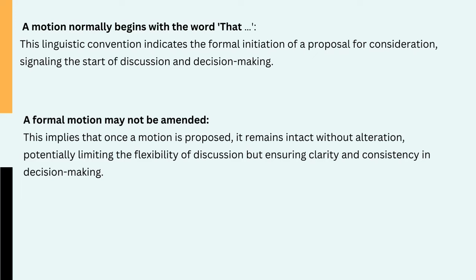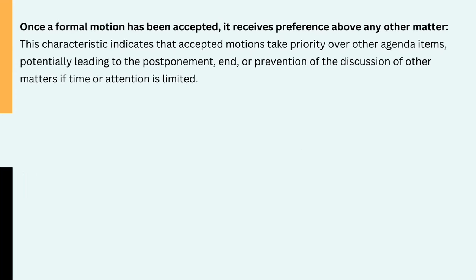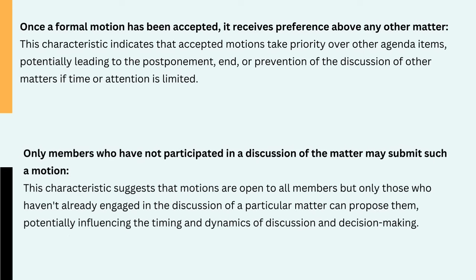8. A formal motion may not be amended — once a motion is proposed, it remains intact without alteration, potentially limiting the flexibility of discussion, but ensuring clarity and consistency in decision making. 9. Once a formal motion has been accepted, it receives preference above any other matter — accepted motions take priority over other agenda items, potentially leading to the postponement, end or prevention of the discussion of other matters if time or attention is limited. 10. Only members who have not participated in a discussion of the matter may submit such a motion — motions are open to all members, but only those who haven't already engaged in the discussion of a particular matter can propose them, potentially influencing the timing and dynamics of discussion and decision making.